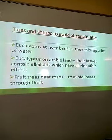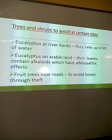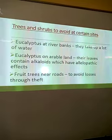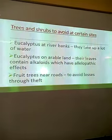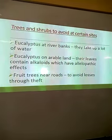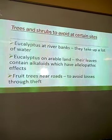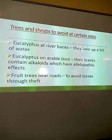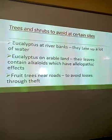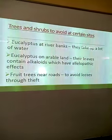Eucalyptus on arable land should also be avoided because their leaves, when they fall, contain a lot of alkaloids which have allelopathic effects — meaning they stress the other crops and prevent them from growing.